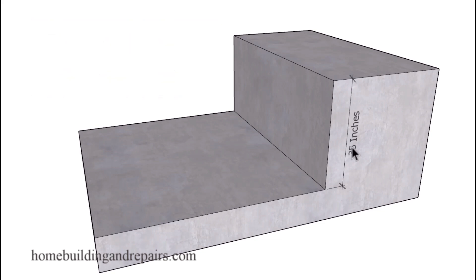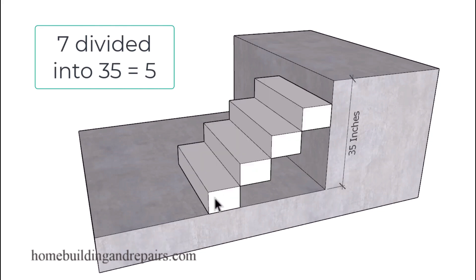So our number is going to have to be in there somewhere. I'm going to start with the number 7. If I divide 7 into 35, I'm going to end up with 5 risers at 7 inches. So each one of these risers is going to measure 7 inches.